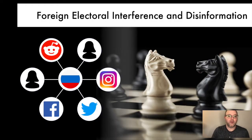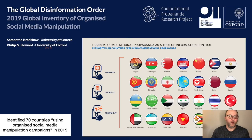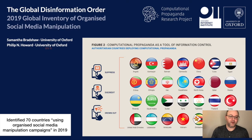The context for this work is online disinformation campaigns, as much work has been done on understanding the role of the Russian Internet Research Agency in the 2016 U.S. presidential election and in ongoing disinformation campaigns and their behaviors across online platforms. This is increasingly a global issue, as shown in the 2019 Global Inventory of Organized Social Media Manipulation Report from the Oxford Internet Institute, where they found 70 countries that showed evidence of organized social media manipulation campaigns.